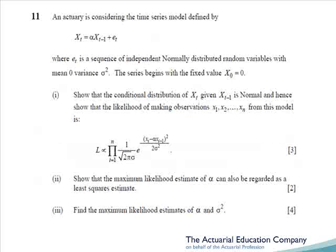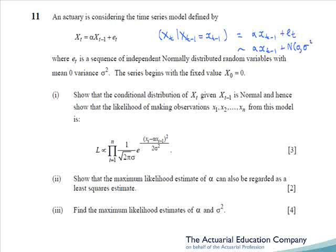Our final question tests time series. The first part was a little unusual and may have thrown students. We're given an autoregressive model of order 1, and told that the white noise is normally distributed with mean zero and variance sigma squared, starting with value zero. We're asked to show that the conditional distribution of X_T given X_{T-1} is normal, and then obtain the likelihood. The distribution of X_T given X_{T-1} equals alpha times x_{T-1} plus e_T. Since we've fixed X_{T-1} as a constant, we have a constant plus a normally distributed white noise term, giving X_T | X_{T-1} ~ Normal(alpha * x_{T-1}, sigma²).